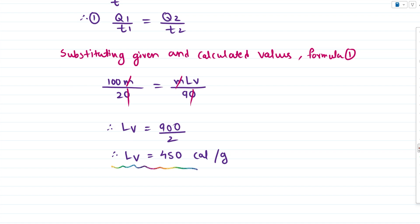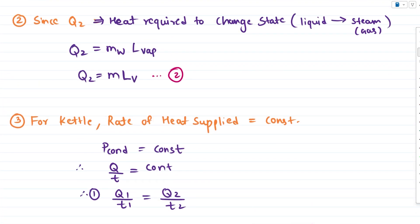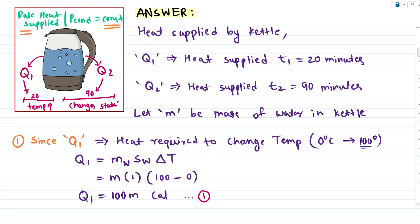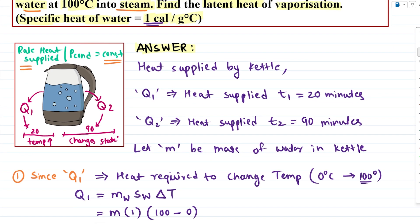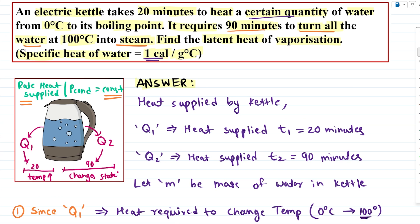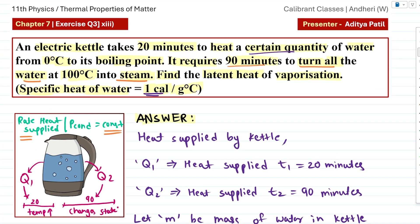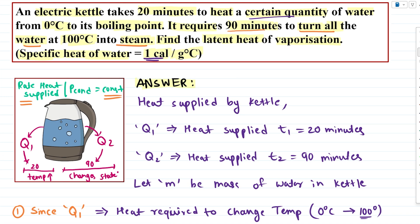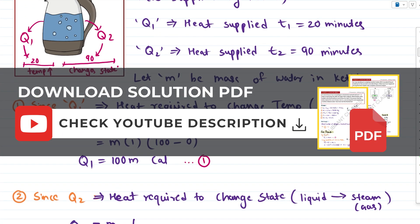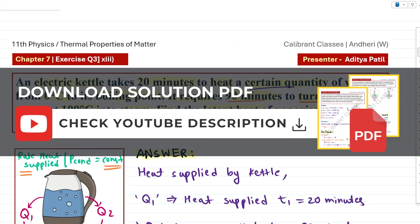So this is the value of the latent heat of vaporization for this particular case. That's it, a very easy question in terms of solving, but yes, you have some conditions, especially how rate of heat is constant. These are the things if you know, this question is pretty easy to deal with. If you want the PDF of this solution, make sure to check the description. Have a nice day.